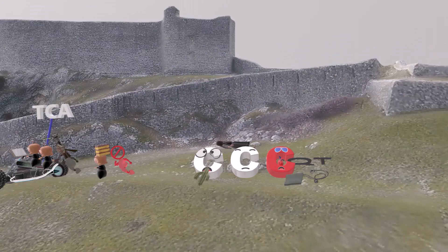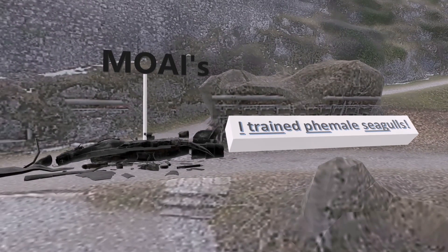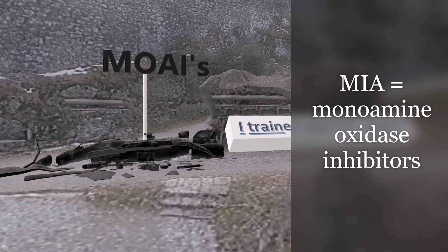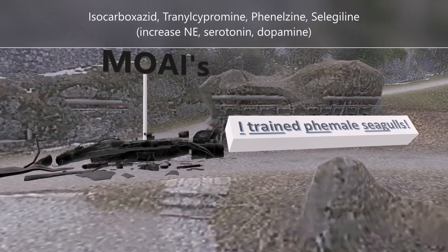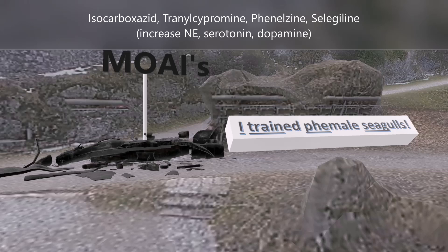Now let's move on to the monoamine oxidase inhibitors. This jet whose passengers are missing in action reminds us of the MAOIs. The sign says 'I trained female seagulls' — I for isocarboxazid. The first three MAOIs mentioned are non-selective. Selegiline is selective, specifically for monoamine oxidase B — therefore it leads to increased levels of dopamine only, whereas the other three increase dopamine, norepinephrine, and serotonin.